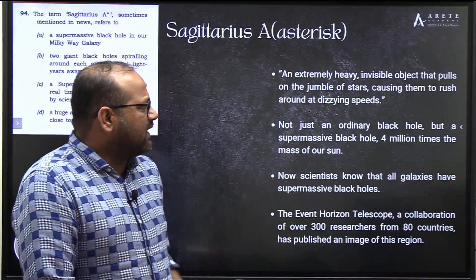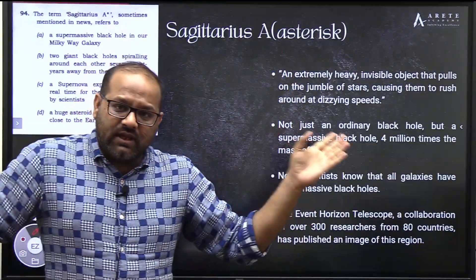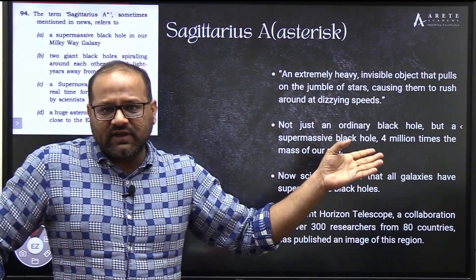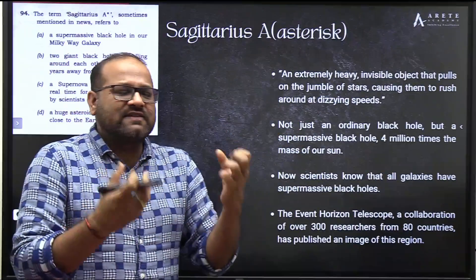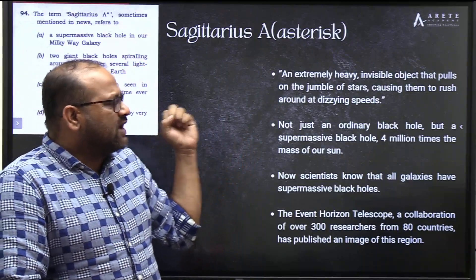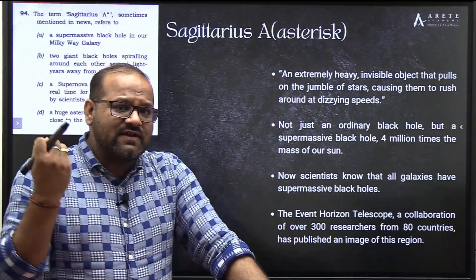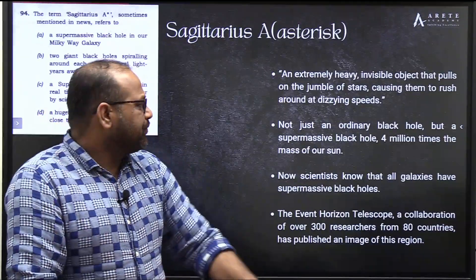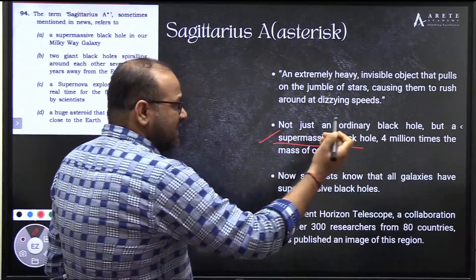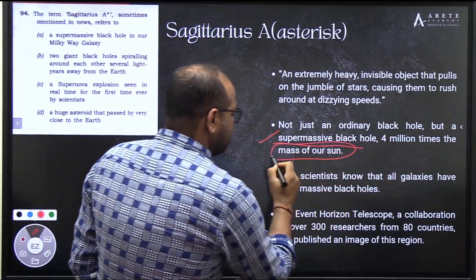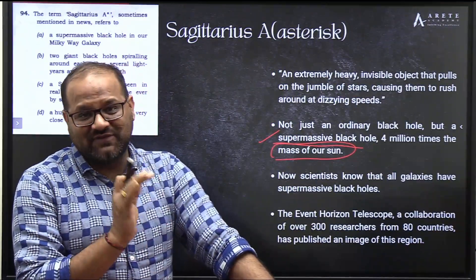Sagittarius A* is described from the Nobel Prize article as an extremely heavy, invisible object that was pulling nearby stars and causing them to rush at very high speed. Scientists observed this event and found it is not just an ordinary black hole but a supermassive black hole - with a mass four million times that of our Sun. Four million times - enormously huge.